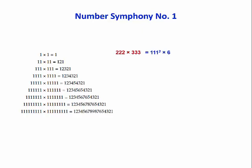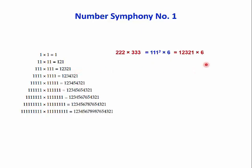We're going to do this using our symphony. Notice there's a factor of two in 222 and a factor of three in 333. If we take those out, two times three gives six, and we've got 111 squared as well, because it's contained in each of those numbers. But 111 squared we know is 12321. So we just need to multiply that by six.